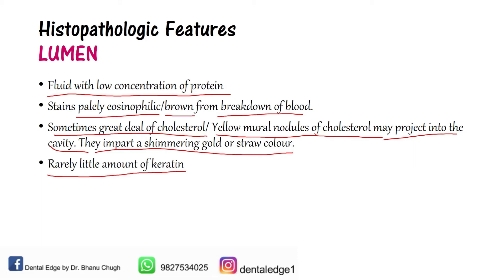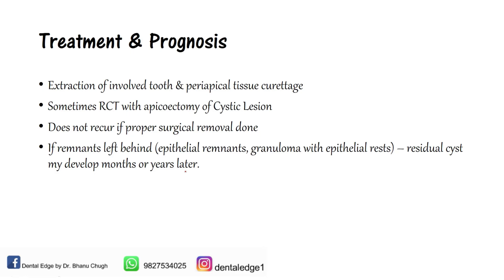Coming to treatment and prognosis — extraction of the involved tooth with periapical tissue curettage is done, and the area should always be properly curetted to remove the lesion completely. Sometimes RCT with apicoectomy is performed, where the soft tissue lesion is removed along with the apex of the tooth and root canal filling is done, preserving the tooth. The cyst does not recur if proper surgical removal is done. However, if epithelial remnants are left behind, a residual cyst may develop within months or years.